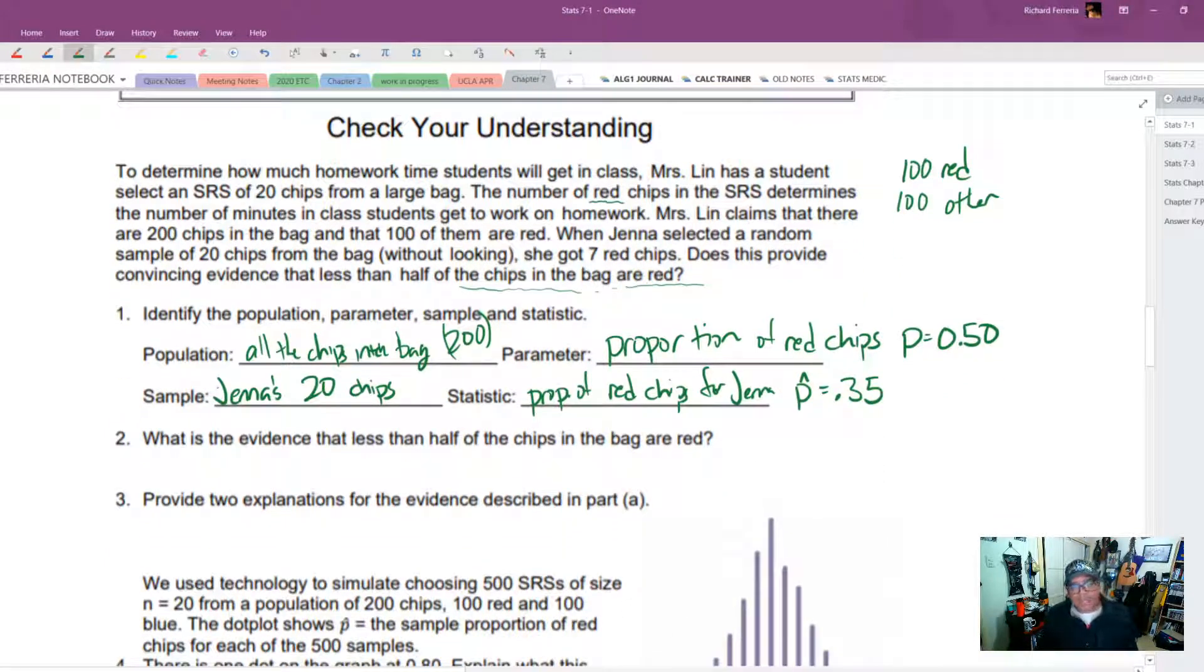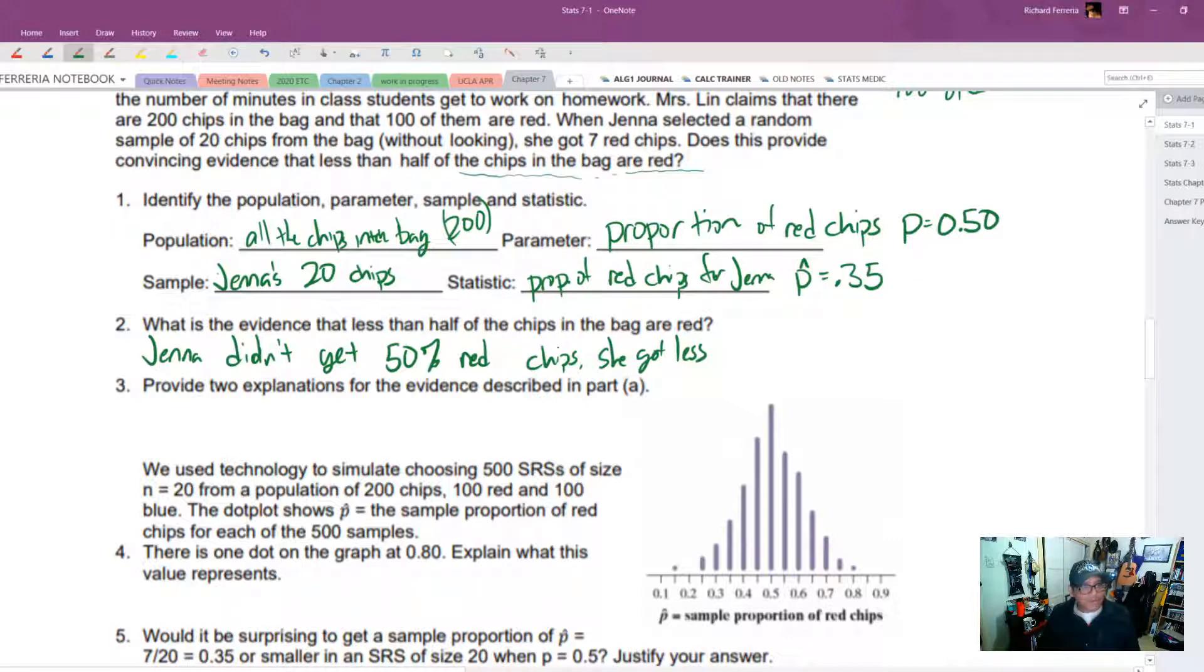What is the evidence that less than half the chips in the bag are red? That's pretty easy. Jenna didn't get 50% red chips. She got less. So, was it possible for her to get less than 50% red chips? Most of us would say yeah, it's possible. Because, you know, whenever you take a sample, you're not guaranteed of getting 10 and 10. You're going to get some kind of variability in there.